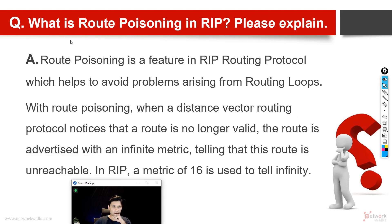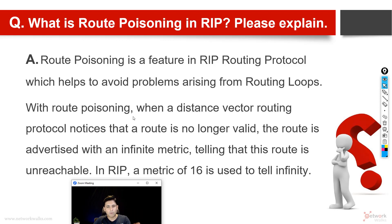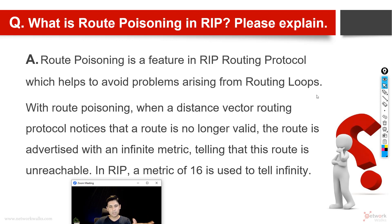Another question is: what is route poisoning in RIP? Route poisoning is a feature in RIP routing protocol which helps us avoid the problems arising from routing loops. When a distance vector routing protocol notices that a route is no longer valid, the route is advertised as an infinite metric, which means 16. In RIP, we consider a route as infinite or unusable when it crosses 16 hops, or if its metric is 16. We advertise that this route is not reachable. Route poisoning means we poison a route and mark it as unreachable — this helps us avoid routing loops.